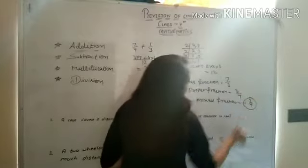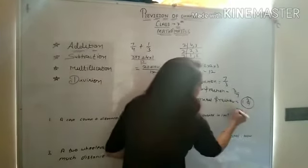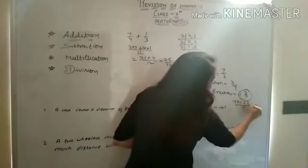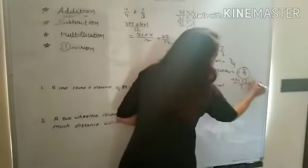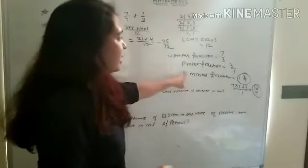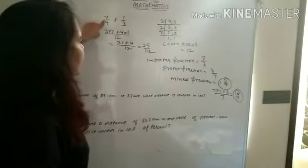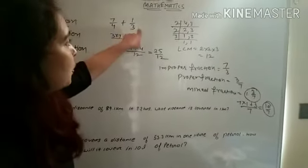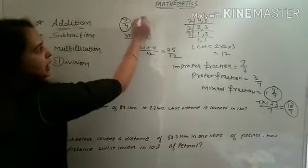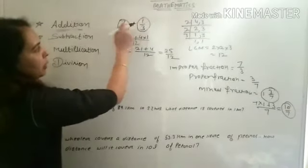We call this a mixed fraction. Now, how to change a mixed fraction into an improper fraction? Multiply the whole number by the denominator and add the numerator - that gives you the new numerator over the same denominator. This is your improper fraction, and you can then add them easily.